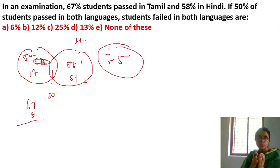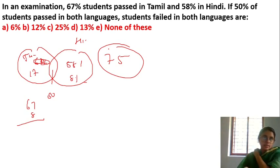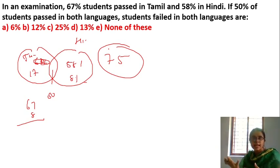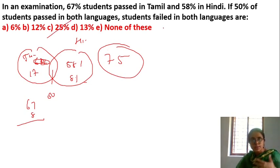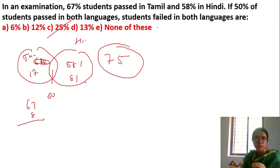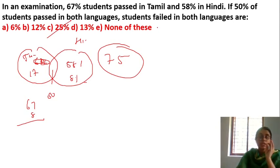75% is the union of those who passed in at least one language. So 100 minus 75 gives 25% who failed in both languages. The answer is 25%.